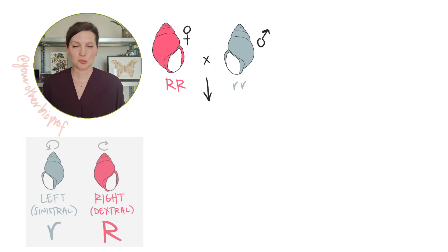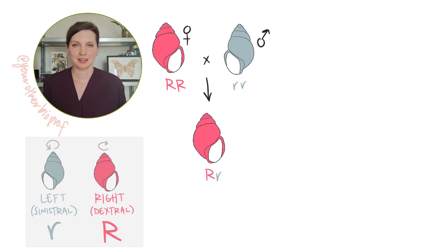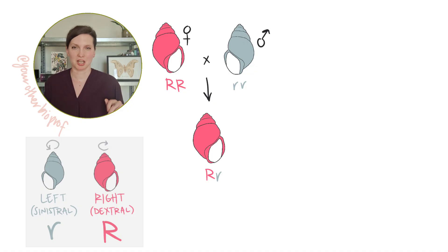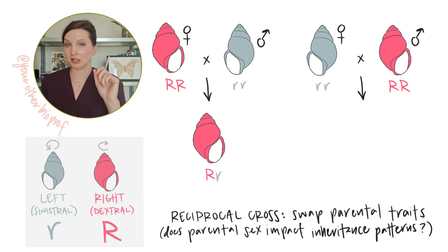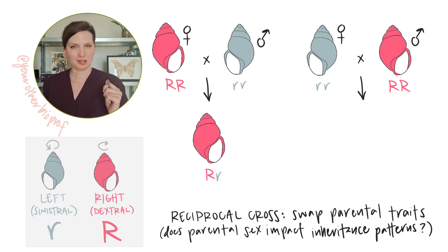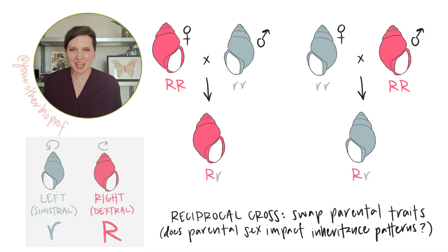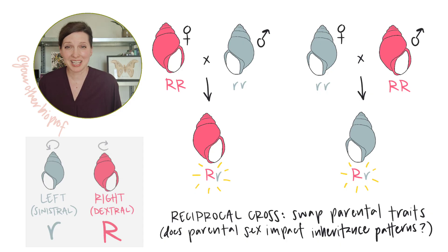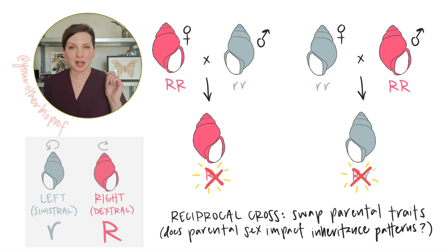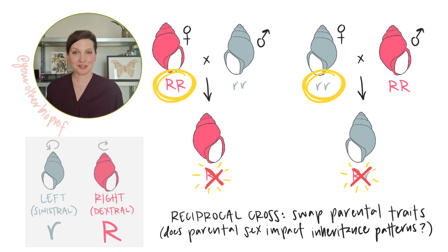Crossing a female right coiling snail to a male left coiling snail results in offspring that are all right coiling. You're probably thinking they're heterozygous and right is dominant — not a problem. But if you do the reciprocal cross, taking a female left coiling snail crossed to a male right coiling snail, all the offspring are left coiling. They're all still heterozygous — the same genotype as in the other cross — but the phenotypes are totally different. The direction of coiling isn't determined by an individual's genotype, but by their mother's genotype. It's a genetic maternal effect.